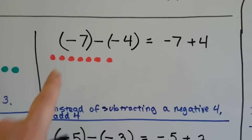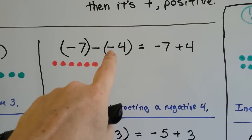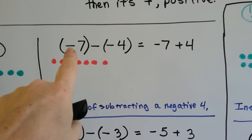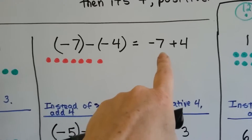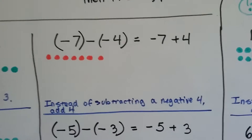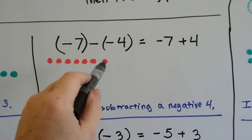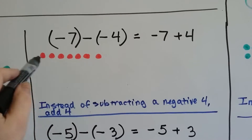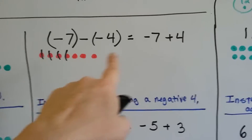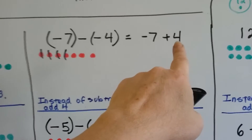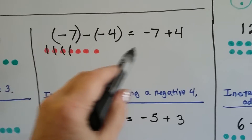Now: negative 7 minus negative 4. We're going to change the minus to a plus, and change negative 4 to a positive 4. So instead of negative 7 minus negative 4, we have negative 7 plus 4. We've got 7 negative chips, and we add 4 positive ones — it's bringing you back up toward the surface, closer to zero. That leaves 3 negative chips.